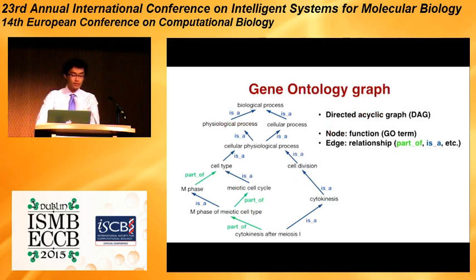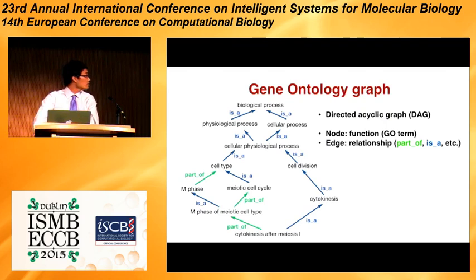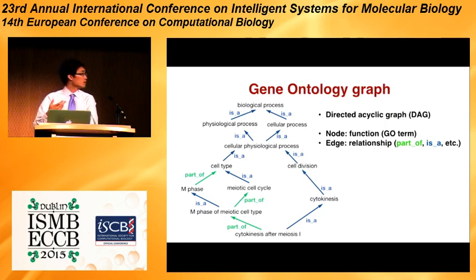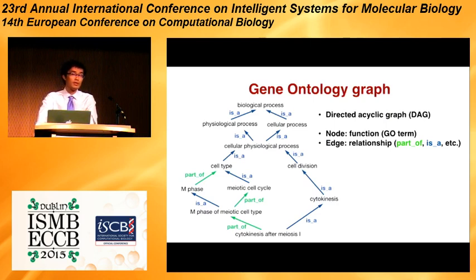To solve this problem, we propose to use the gene ontology graph to alleviate the sparse annotation challenge. The gene ontology graph is a directed acyclic graph. Each node is a function, also called a GO term, and each edge is a relationship between two functions. The relationship could be a part-of relationship, an is-a relationship, or other relationships. For example, cellular process is a biological process. Intuitively, if two functions are very close in the gene ontology graph, they may be annotated by similar genes. So we can use the gene ontology graph to learn function similarity and use the training samples of similar functions for sparsely annotated functions to help alleviate the overfitting problem.